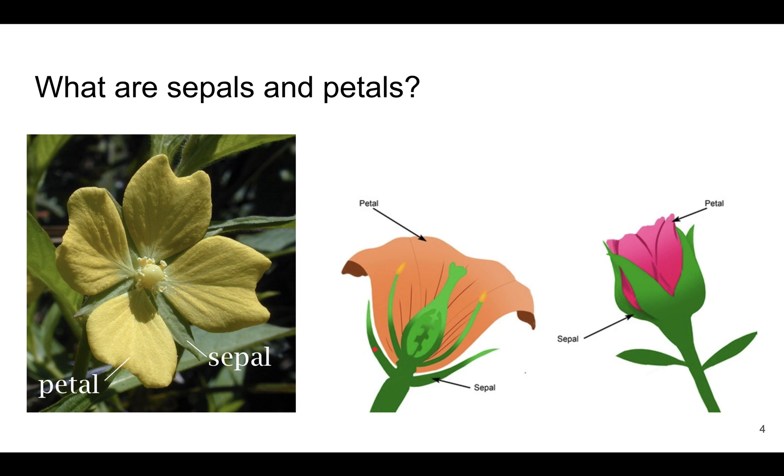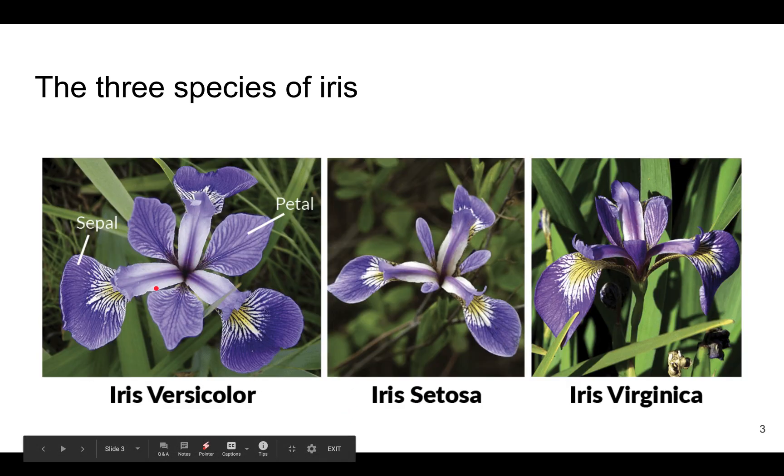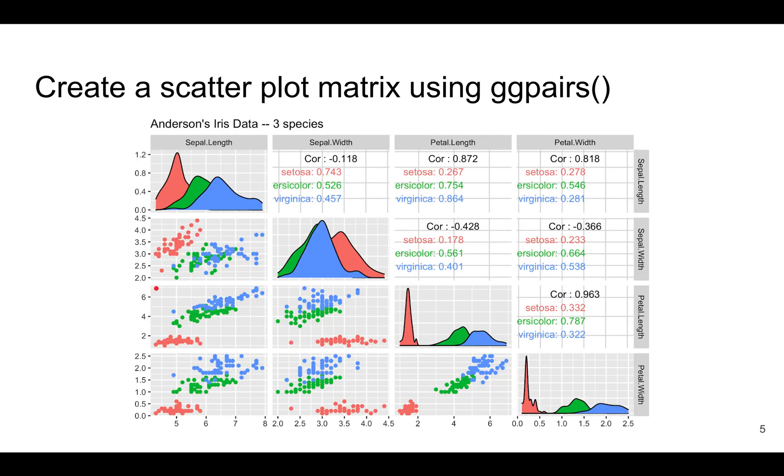A very diligent person measured the lengths and widths of the sepals and the petals for 150 flowers and wrote them down. So let's create a scatter plot matrix using the ggpairs function to take a look at what the data looks like.